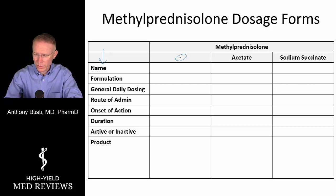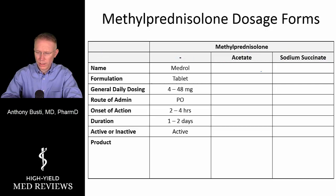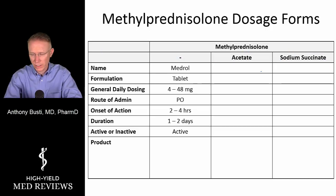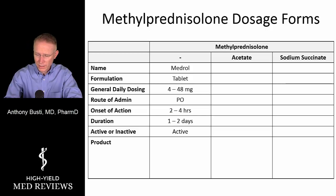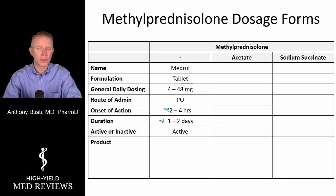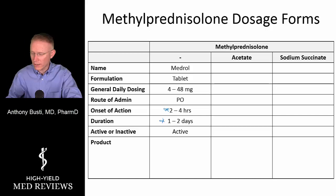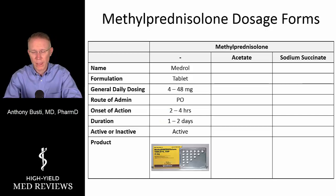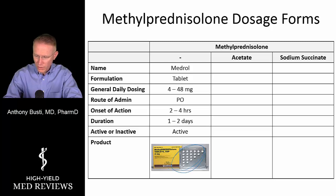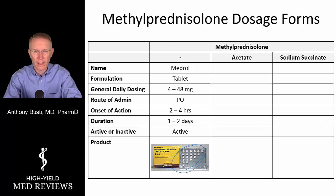The oral formulation is plain methylprednisolone tablet, administered by mouth, ranging from 4 to 48 milligrams, with an onset of about 2 to 4 hours and lasting about 1 to 2 days. It is already active — there is no metabolism, like with prednisone, that has to occur for it to become active. The most common formulation is the Medrol dose pack, which comes prepackaged with tablets in a tapering format.